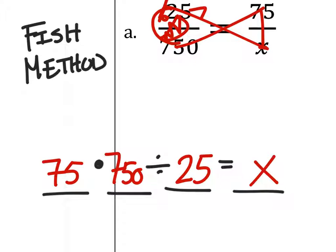Then I just plug this right into my calculator. 75 times 750, divided by 25. Alright, here's your answer.